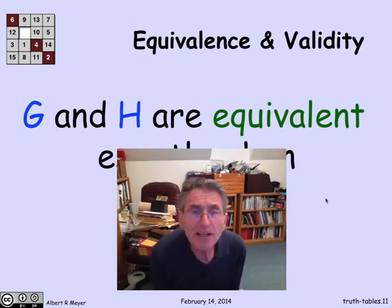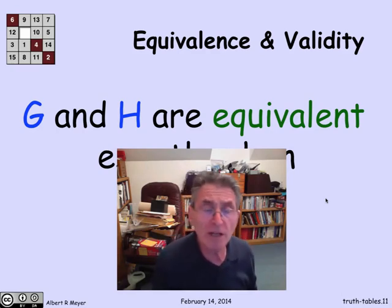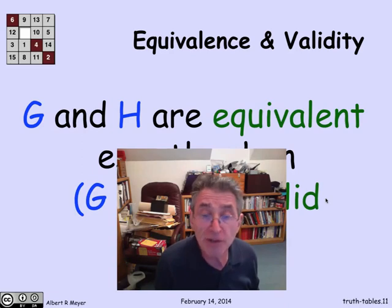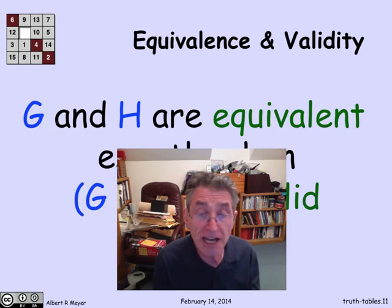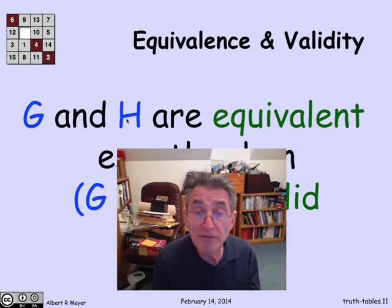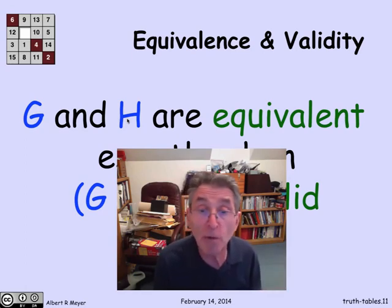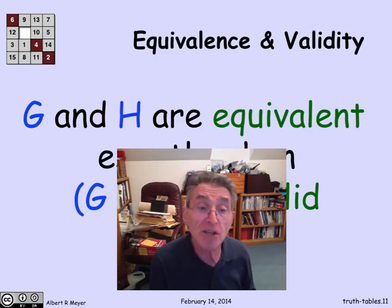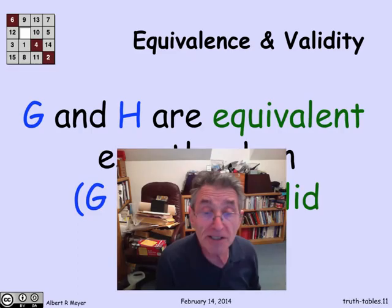We can connect validity and equivalence: two formulas g and h are equivalent if and only if g if and only if h is valid. G if and only if h is true when g and h have the same truth value, and g and h being equivalent means they always have the same truth value, no matter the environment. So g and h are equivalent exactly when g if and only if h is valid, and the converse argument works the same way.